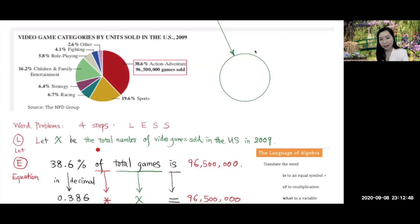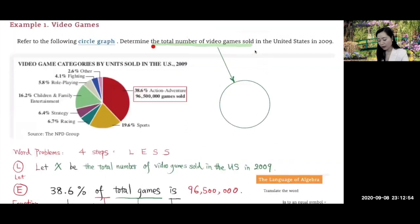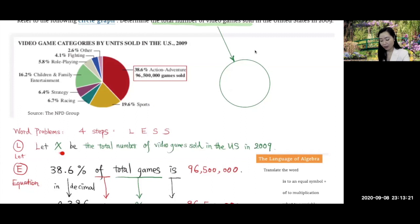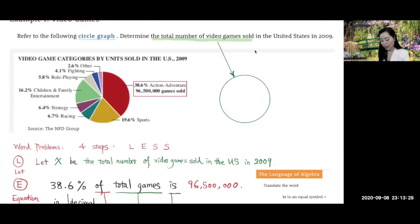The first step, L, stands for let X be. We're trying to declare the variable. So think about what they're asking. They're asking the total number of video games sold in the United States in 2009. So whatever they're looking for, we let X be that. So let X be the total number of video games sold in the United States in 2009. If this is a 10-point problem, you get one point for declaring your variable.